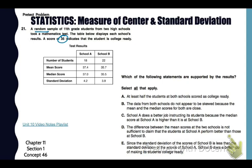Look at number 21 in your pretest. We're going to focus on measures of center. So mean, median, and mode, and also standard deviation, which is the average distance from the average. A random sample of 11th grade students from two high schools took a math test. The table below shows or displays each school's results. A score of 35 indicates that the student is college ready. We need to look and see which statements, could be more than one, are supported by the results. So at least half the students at both schools scored as college ready. Well, our median scores are 37 and 35.5. So that means yes. Since the middle score is above that target number of 35, at least half of them at both schools did. So that would be true.